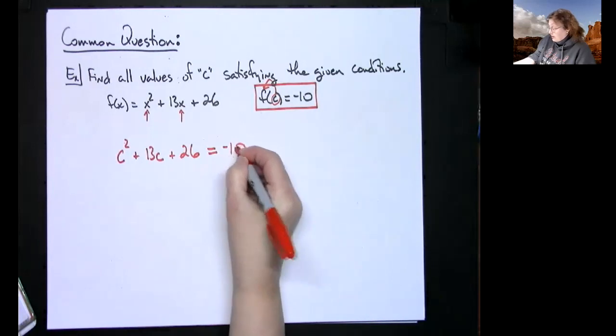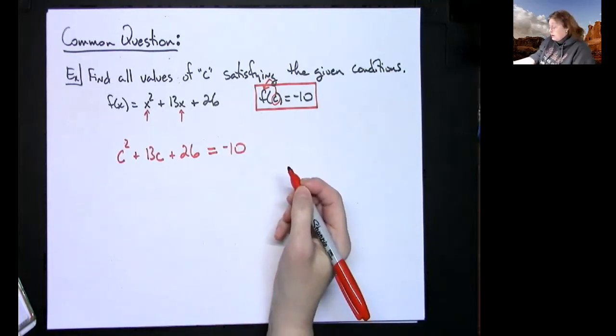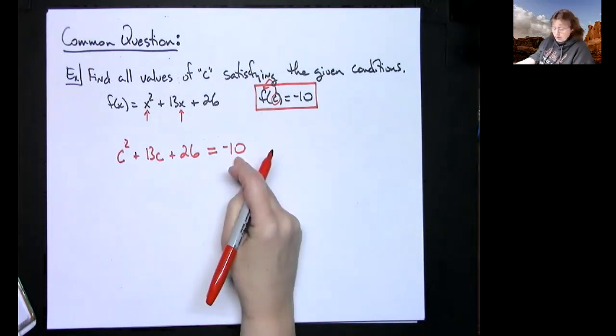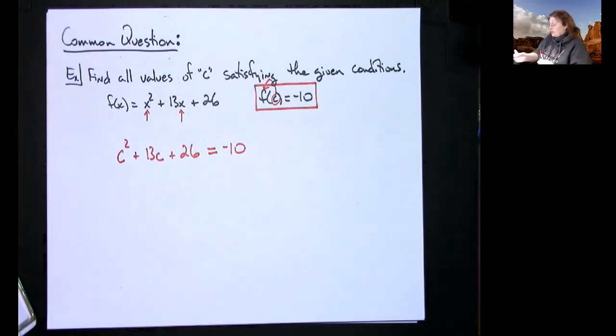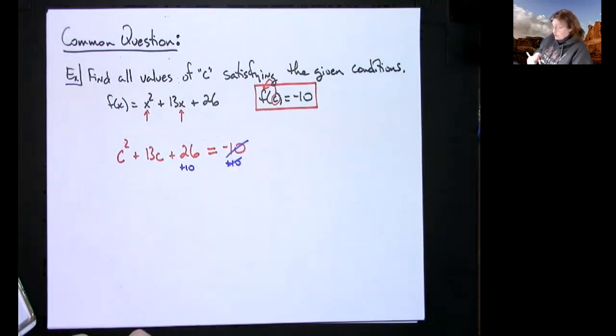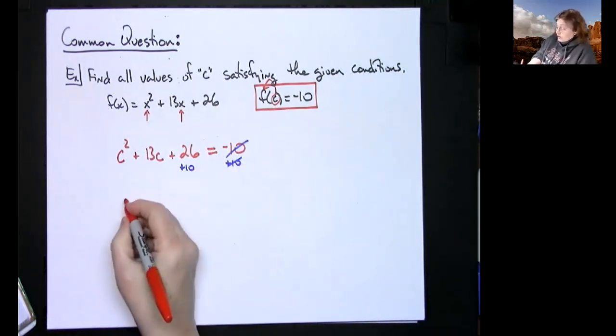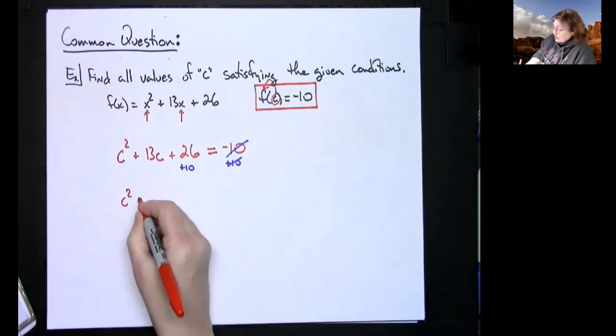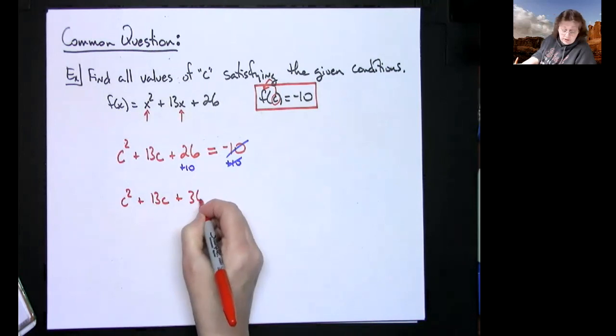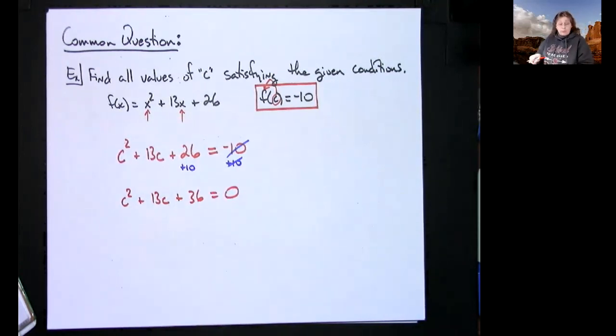I plug the c in, now I'm going to set it equal to negative 10. Then can we solve this? We would add 10 to both sides of the equation. Those two things are going to cross out and then we're going to have c squared plus 13c plus 36 is equal to zero.